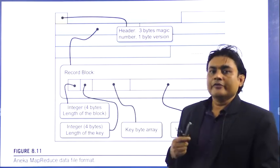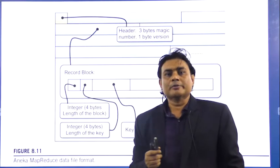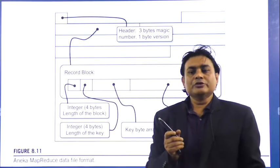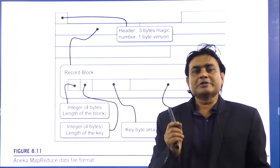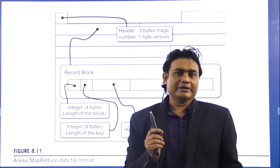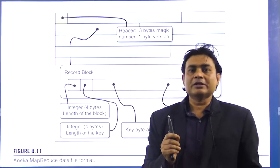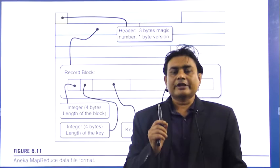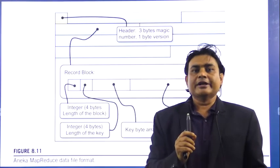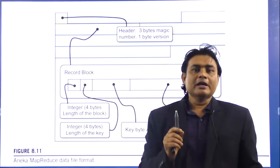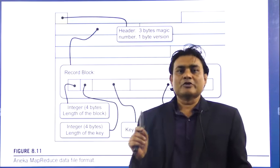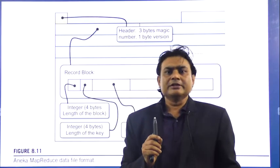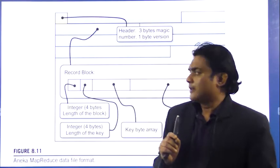Whenever you are processing data in the forms of MapReduce programming models, any kind of input must be converted into key-value pairs, because mappers will accept only data in the forms of key-value pairs. With the help of record readers, the record readers will convert the input data into the form of key-value pairs, and that is given to the reducer. The reducer also processes it and produces key-value pairs.